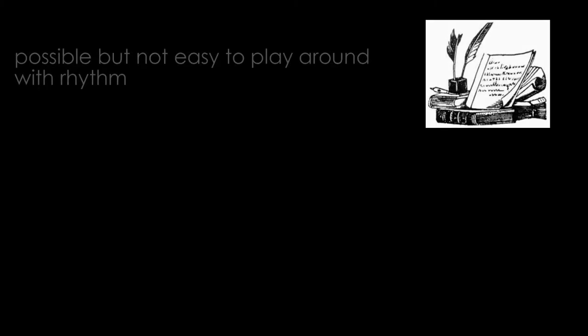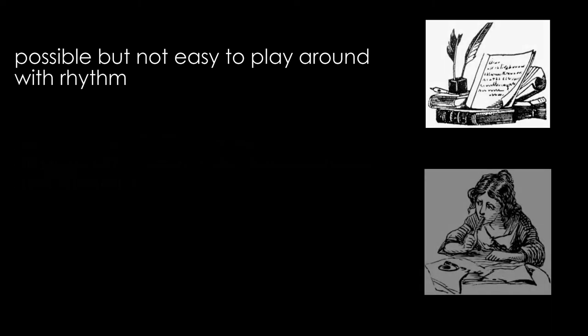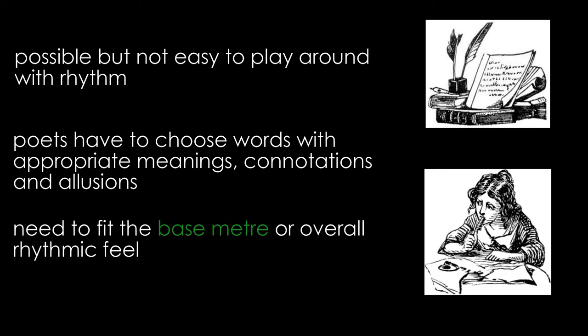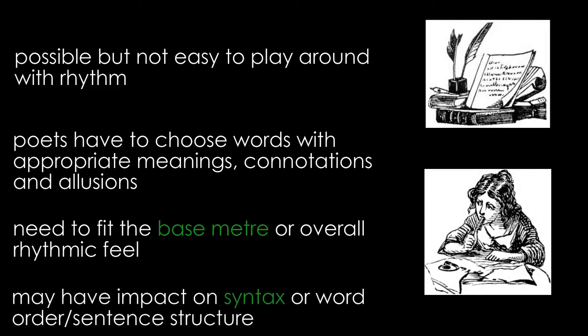You might think that if languages have certain rhythms, it will be difficult or even impossible to play around with these. But you'd be wrong. It isn't easy, though. Not only do poets have to choose words that have the meanings, connotations and allusions that they want to convey, but they also need to fit the base meter, or in the case of free verse, the overall rhythmic feel they have chosen for the poem. This may have an impact on syntax, or how the poet uses word order and sentence structure.